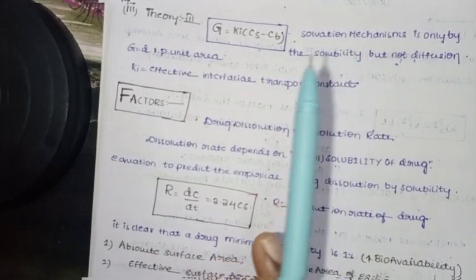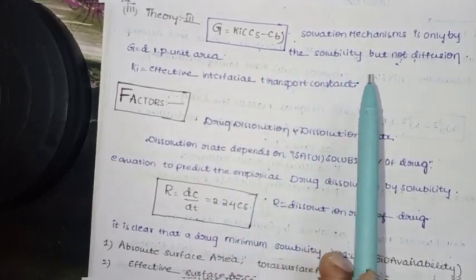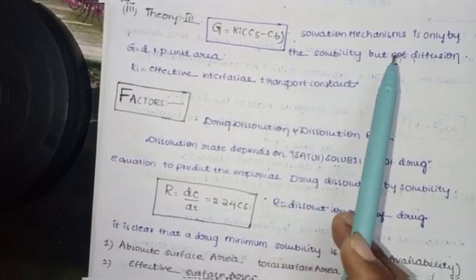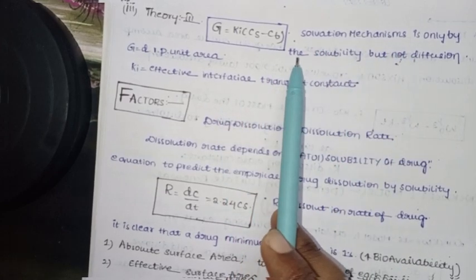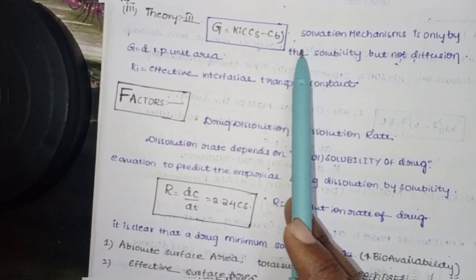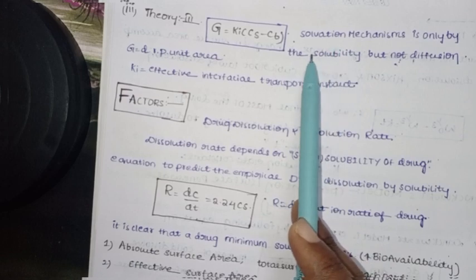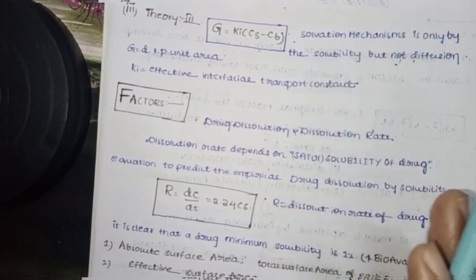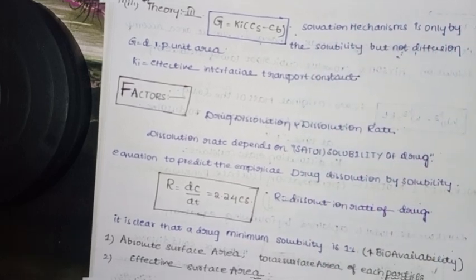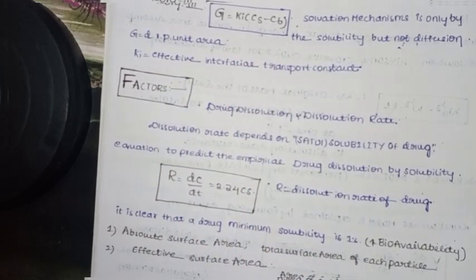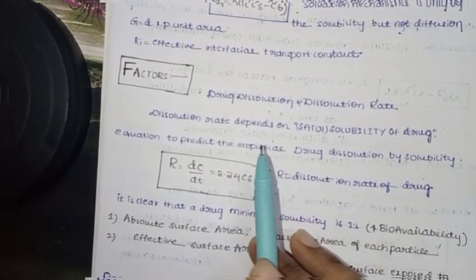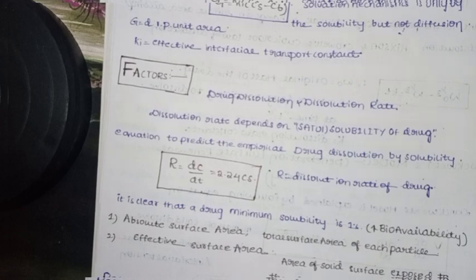The point is clear: dissolution is controlled only by solubility, not diffusion. Here, diffusion occurs from higher concentration to lower concentration, which is how the drug dissolves. This is mandatory, and that's why solubility is important, not only diffusion.